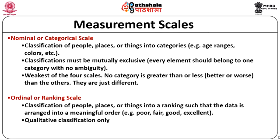First, let us start with nominal or categorical scale. When we take a particular data about an individual, we can assign this individual to a specific age range, or based on a specific nationality, or assign a label based on say their percentage of marks. What we are trying to do here is provide either a number or a categorical label, thereby quantifying that data. This is what is called nominal or categorical scale data.